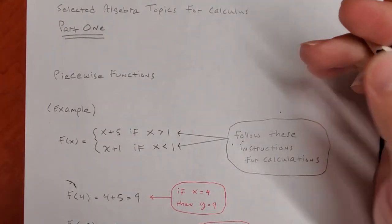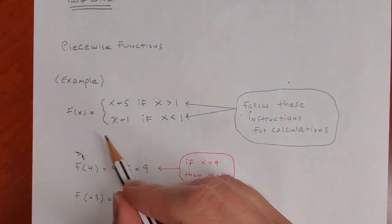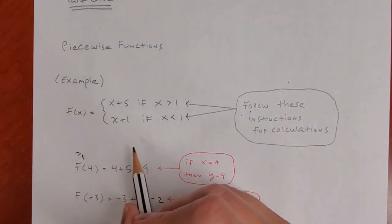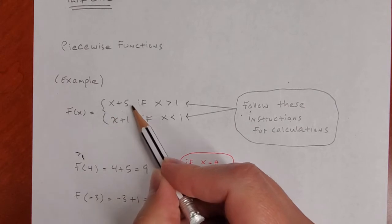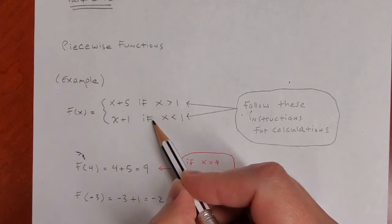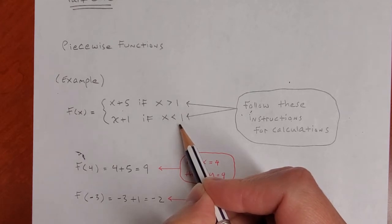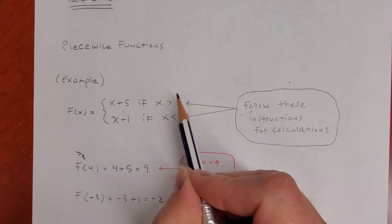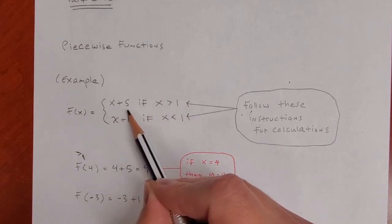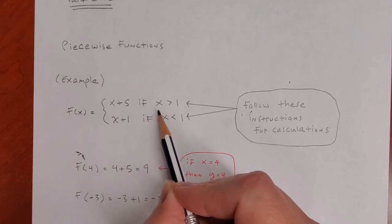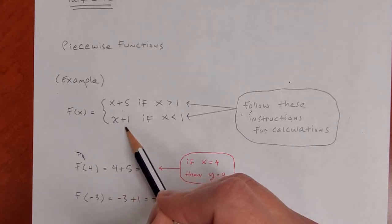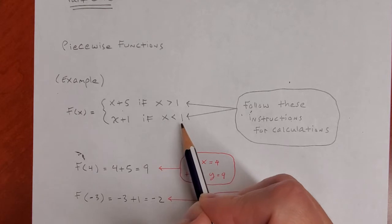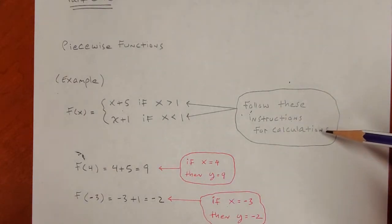Rather than give you a definition, I'll just give you an example. This is a piecewise function — that's what they look like. You've got function notation f(x), braces, two formulas, 'if' conditions. You just take this literally: y is x plus 5 if you put in an x bigger than 1, and y is x plus 1 if you put in an x less than 1. Just follow the instructions.